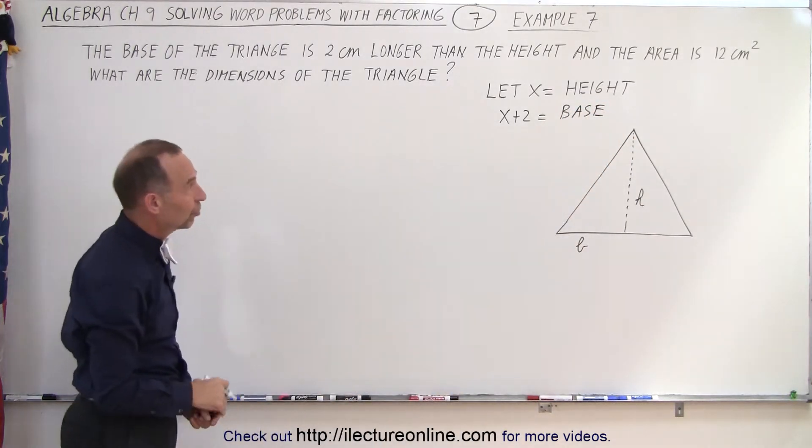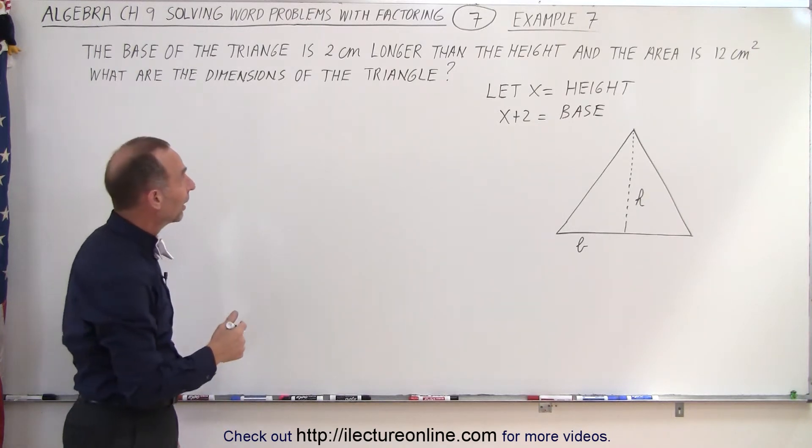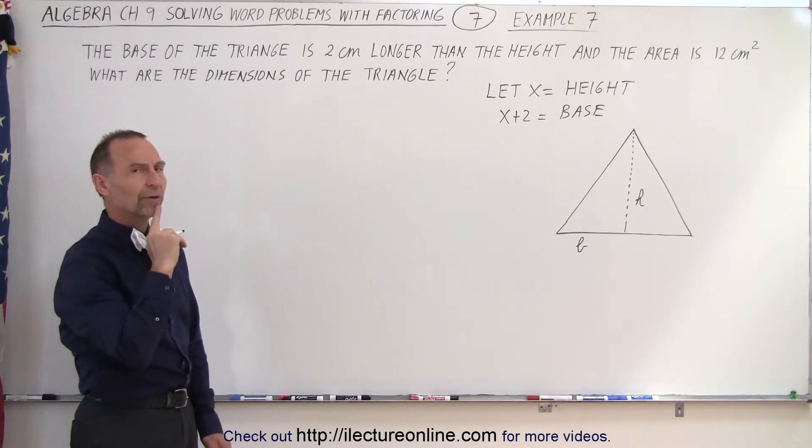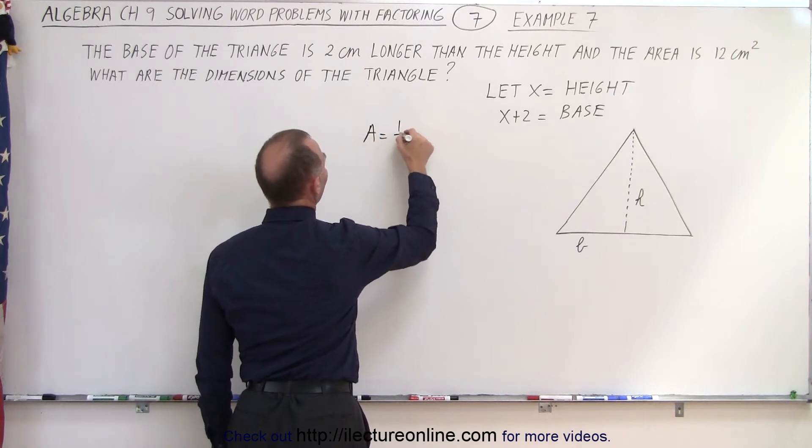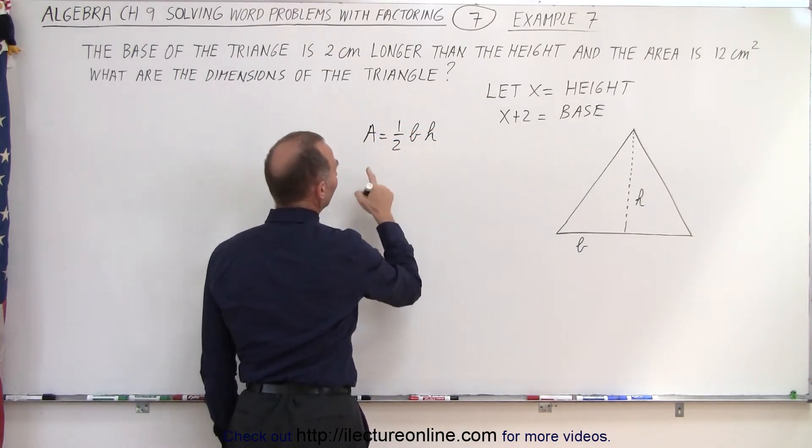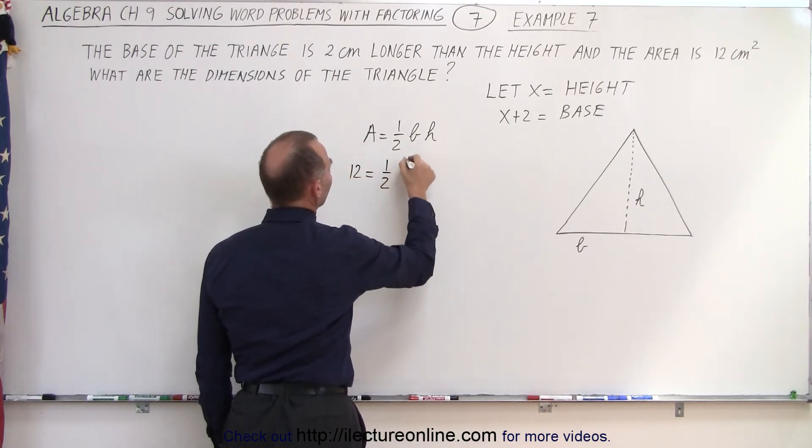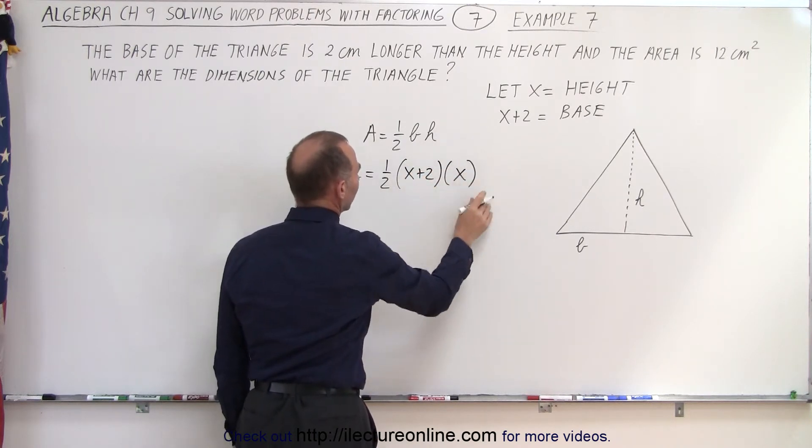Now we have the two dimensions, the height and the base of the triangle expressed in terms of x. They give us a hint that the area is equal to 12 centimeters squared. For triangles, the area is equal to 1/2 the base times the height, which means in this case, the area being 12, 12 equals 1/2 times the base, which is x plus 2, times the height, which is x.